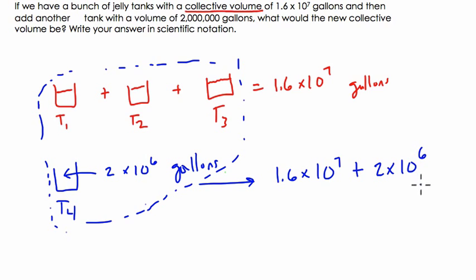So 10 to the 6th, I'll make it into 10 to the 7th by multiplying that by 10. But I can't change the value of this second number here, right? I don't want to change that value. I want to also divide this by 10. So an easy way to do that is to do 2 divided by 10, which is 0.2. And 10 to the 6th times 10 is 10 to the 7th.